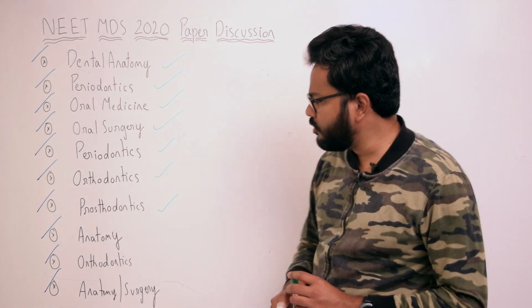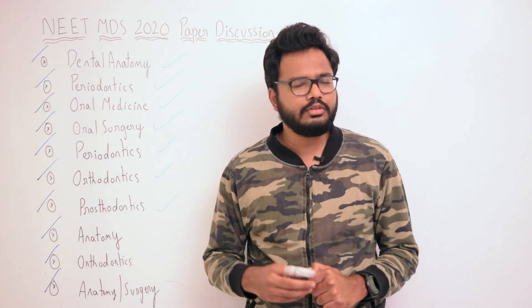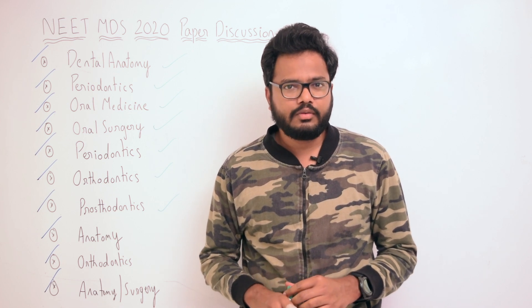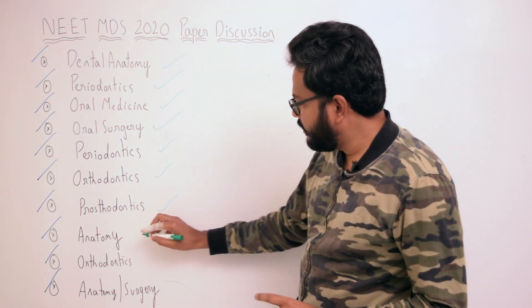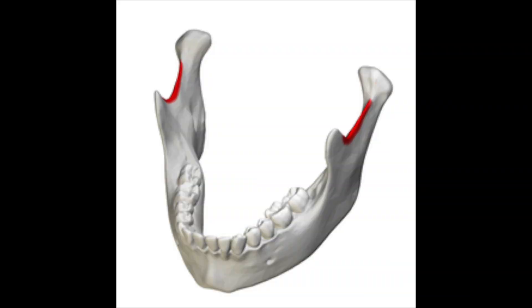The next question is from occlusion. As you can see, we have different types of occlusion. In the case of Class I malocclusion, the mesiobuccal cusp of the upper first molar coincides with the buccal groove of the lower first molar. Next is another question from anatomy — as you can see, it's the sigmoid notch or mandibular notch.